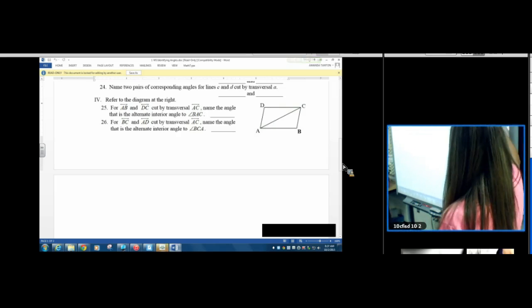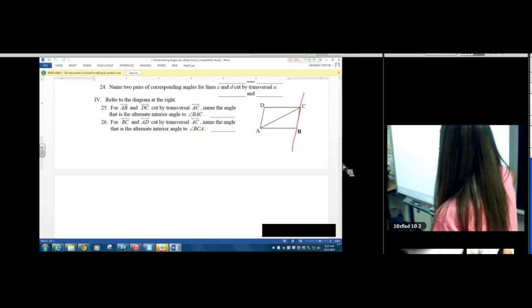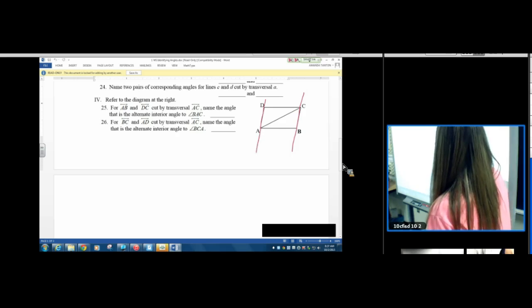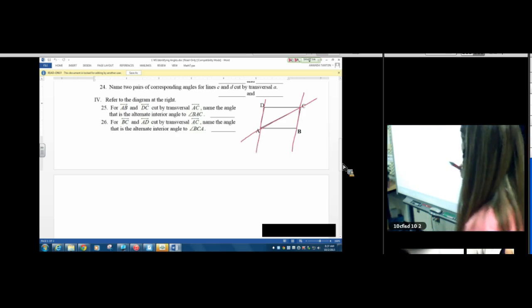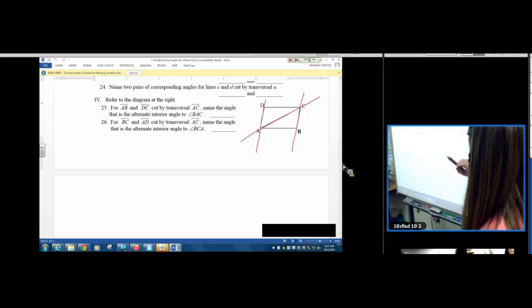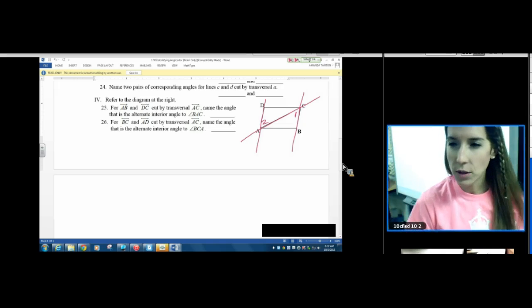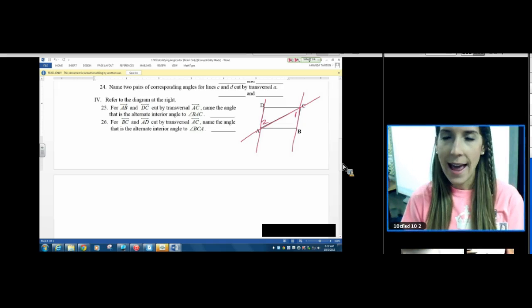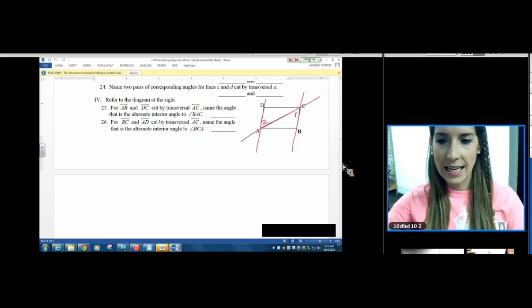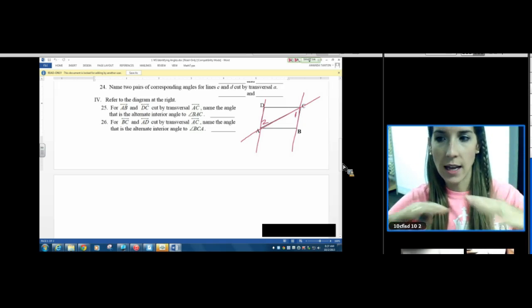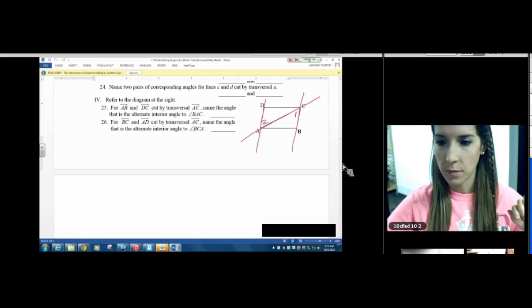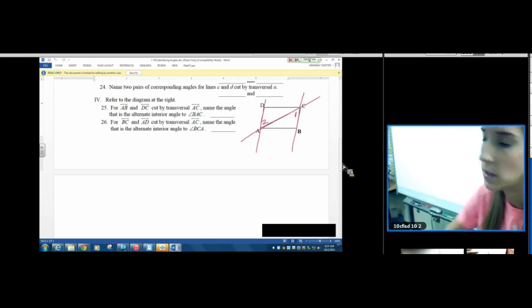Okay, next one. For BC and AD cut by transversal AC, name the angle that's alternate interior to BCA. So angle 1, go to the alternate side. And it would be angle 2. So that would be DAC. So it helps a lot of times if you extend your lines, extend the lines, extend the transversal. Alright, let's get into today's lesson. First we're going to review some vocab.